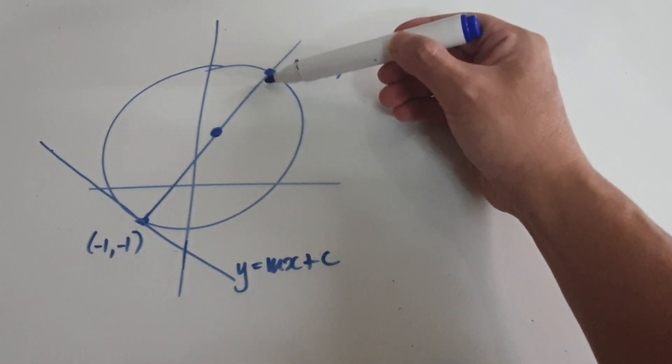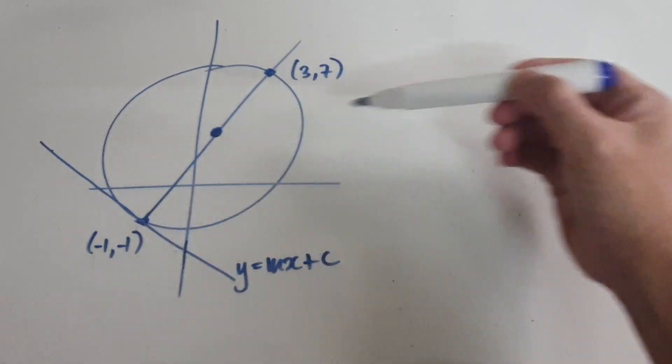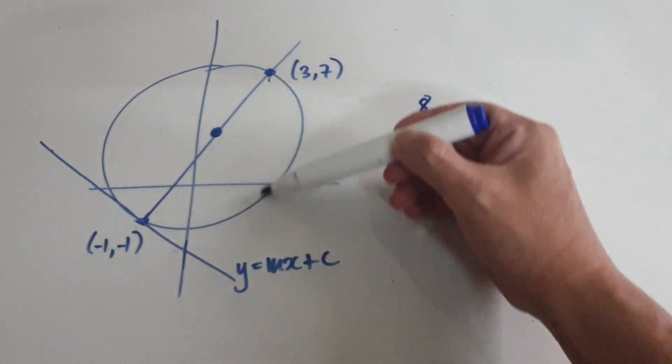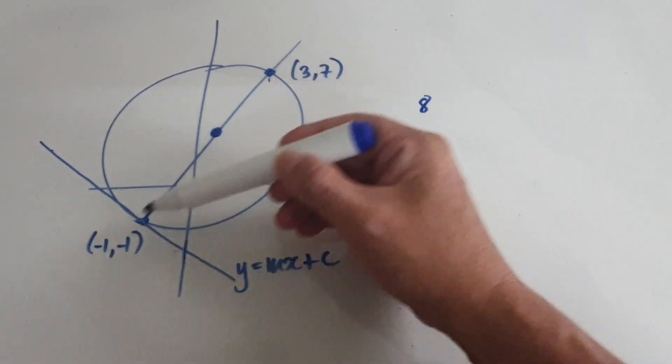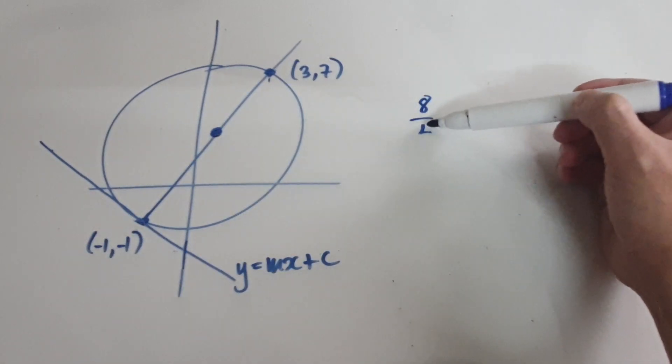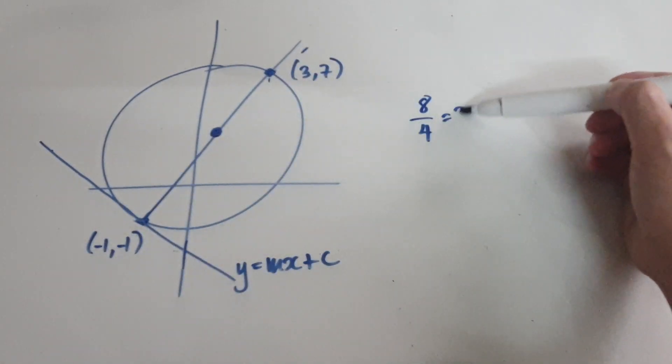So the gradient would be the height, which would be 8. The height here would be 8, and the across here would be 4, because you've got to look at this. So that would be 4. So the gradient of this line is actually 2.